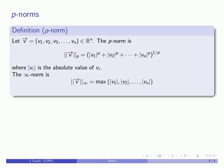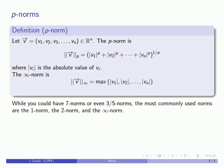Because this defines p-norms in a very general fashion, p could be anything — we could have a seven-norm or even fractional norms like a three-fifths norm. The most commonly used norms are the 1-norm, the 2-norm, and the infinity norm.